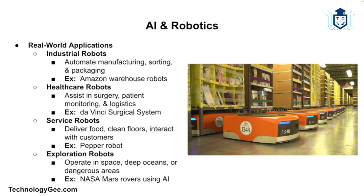Here are some examples of AI-powered robots. Industrial robots are found in factories, warehouses, and production lines. They use AI to detect objects, adjust their grip, and optimize workflow — for example, Amazon warehouse robots that move shelves around to fulfill orders faster. Healthcare robots help with surgeries, patient care, and hospital logistics. An example is the Da Vinci Surgical System, which assists doctors in performing complex procedures with robotic arms controlled by human surgeons and guided by AI algorithms for precision.